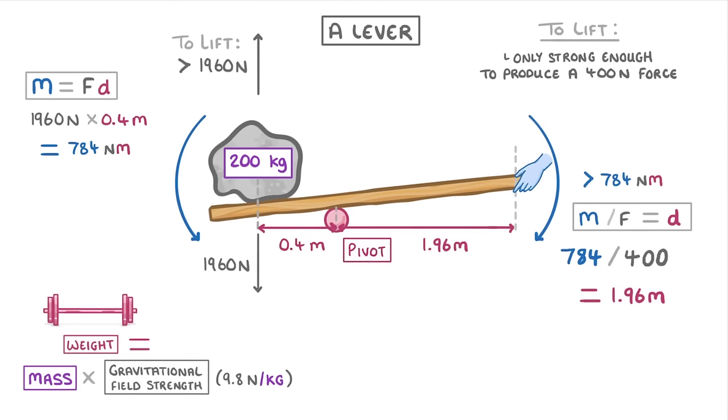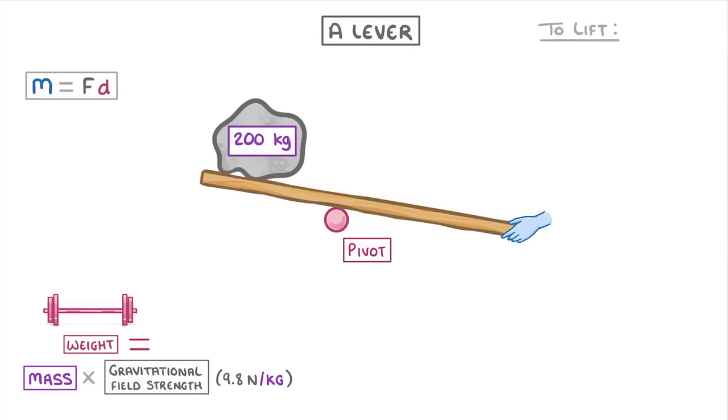So as long as we push on the lever further than 1.96 meters from the pivot, we'll be able to lift our rock, even though we're only applying a relatively small force.